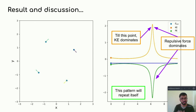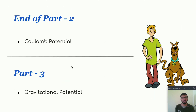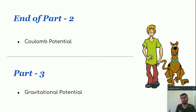I will post these codes on my GitHub account so you can easily find them. This ends our second part. In this part we discussed the theory of Coulomb force and simulated examples related to it. In the next part I will focus on gravitational potential and simulate some systems. Hope you enjoyed this lecture. See you in the next video.